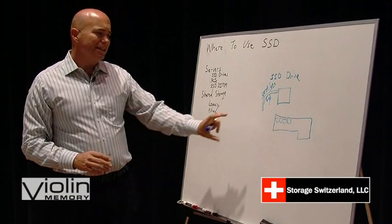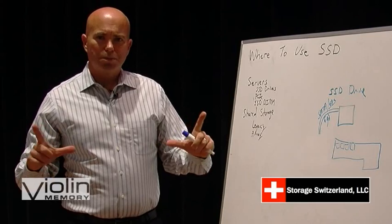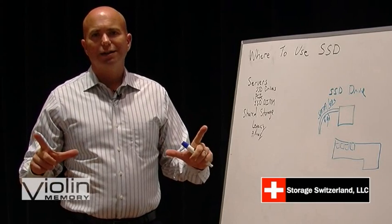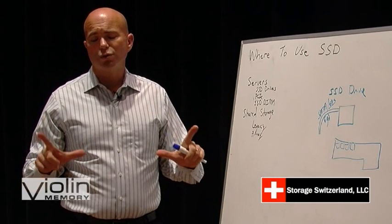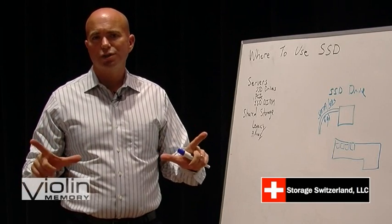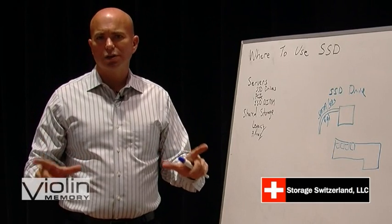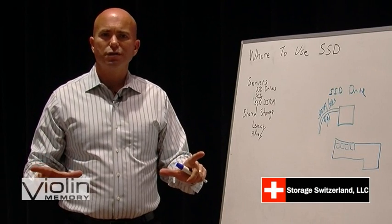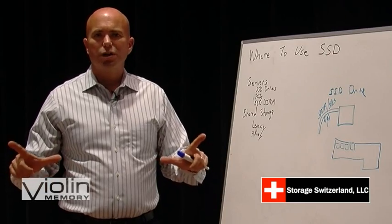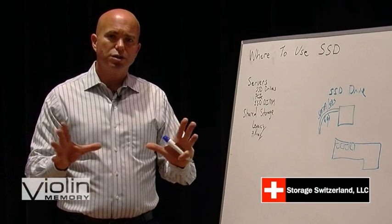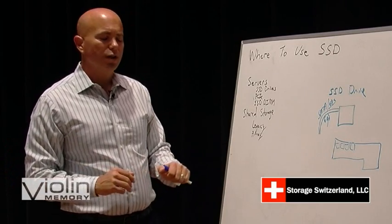The key thing with PCIe is really how much space it takes. Many of the initial cards were full-height, full-size cards. If you had a 1U or even a 2U server, you may not have had room to install one of these bigger cards, although we are starting to see some smaller cards come to market now.